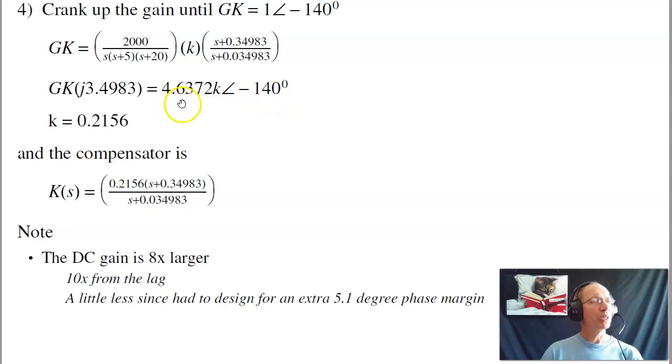What I want for your phase margin, I want the gain to be 1 when I'm 40 degrees away from 180. That's a 40 degree phase margin. I want the gain to be 1 when I'm at minus 140 degrees. Gain's wrong. So add k. k is whatever it takes to make the gain 1. k is 0.21.